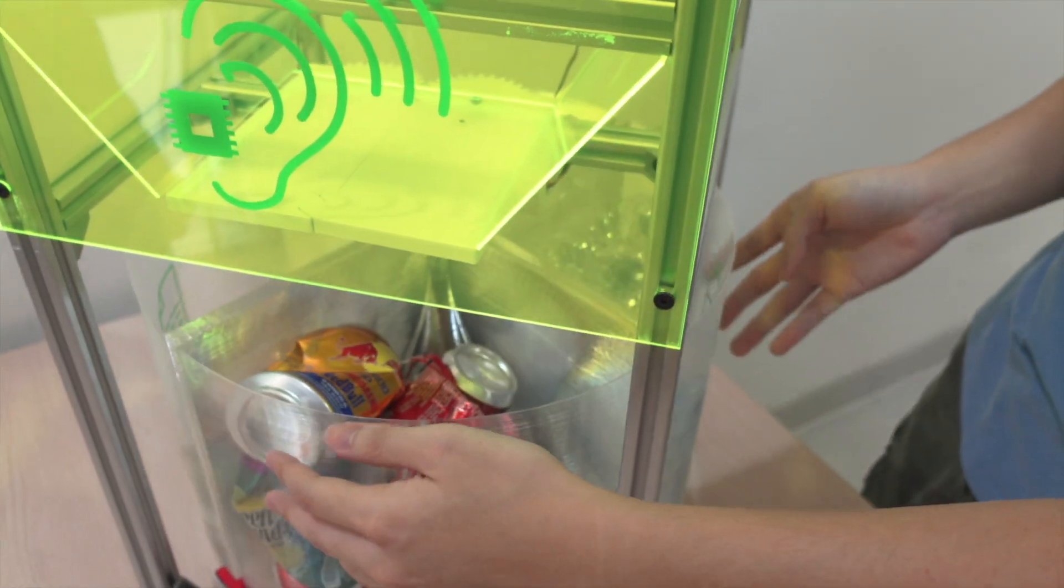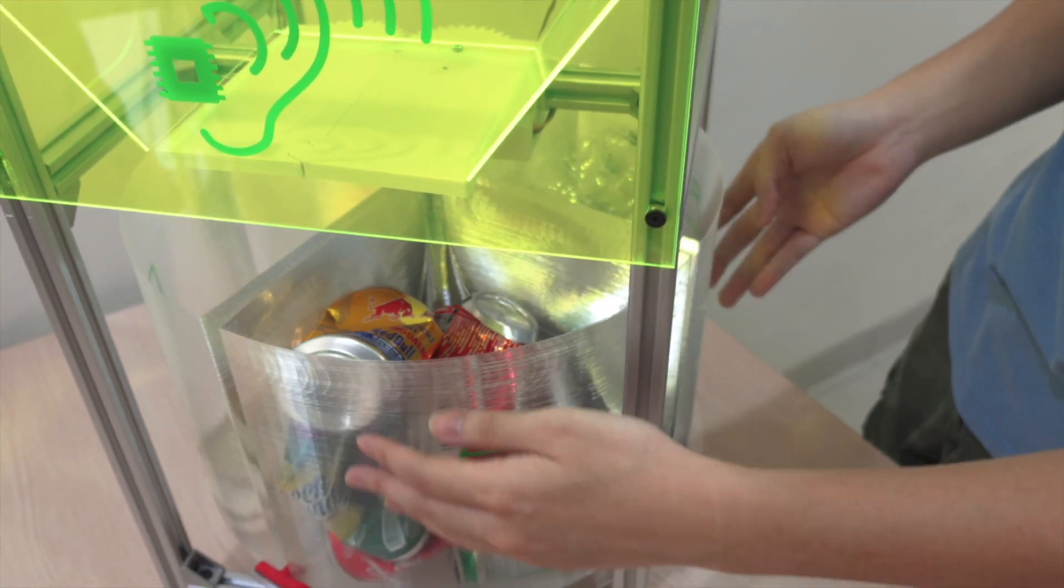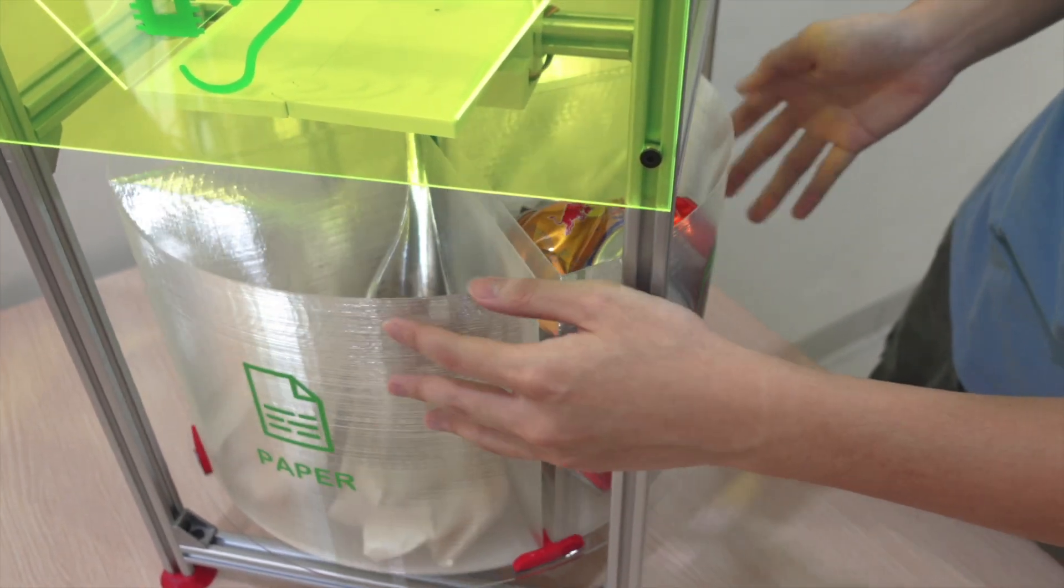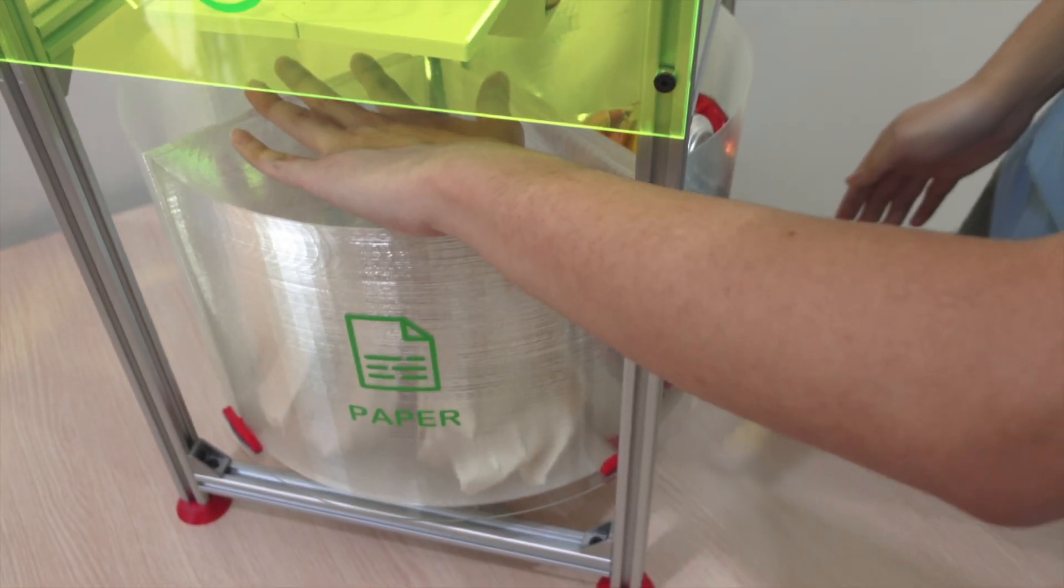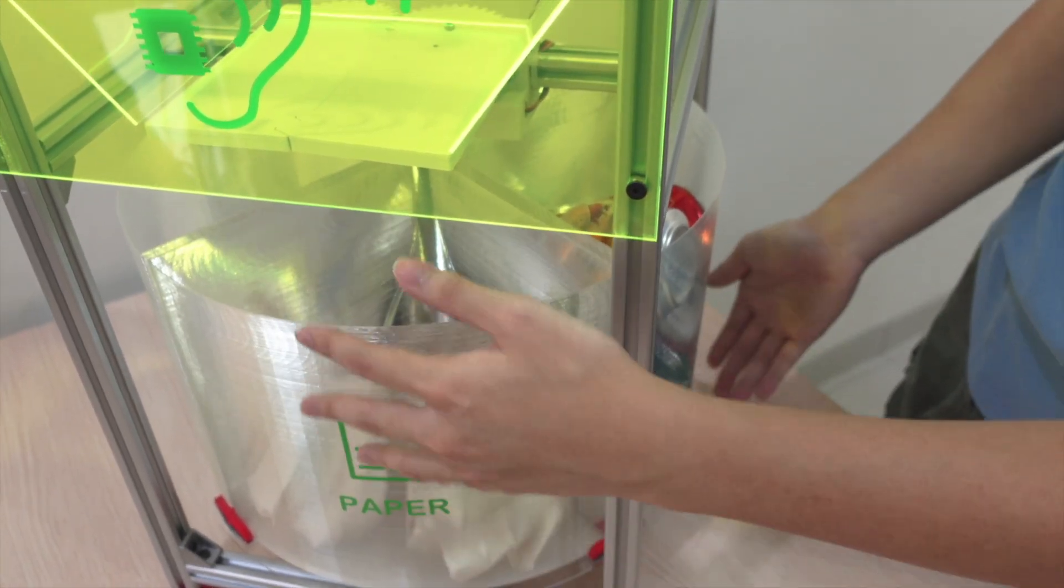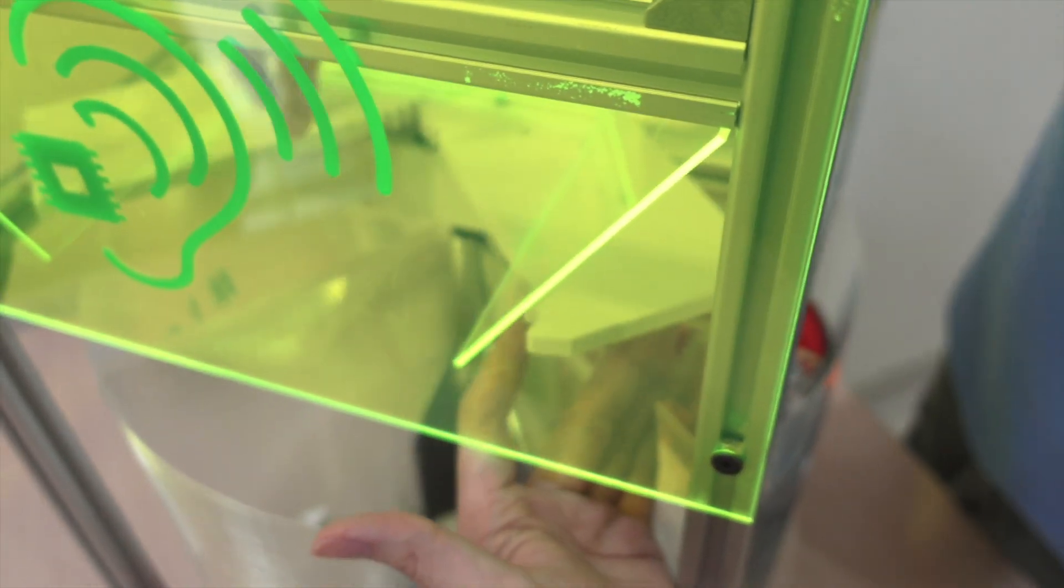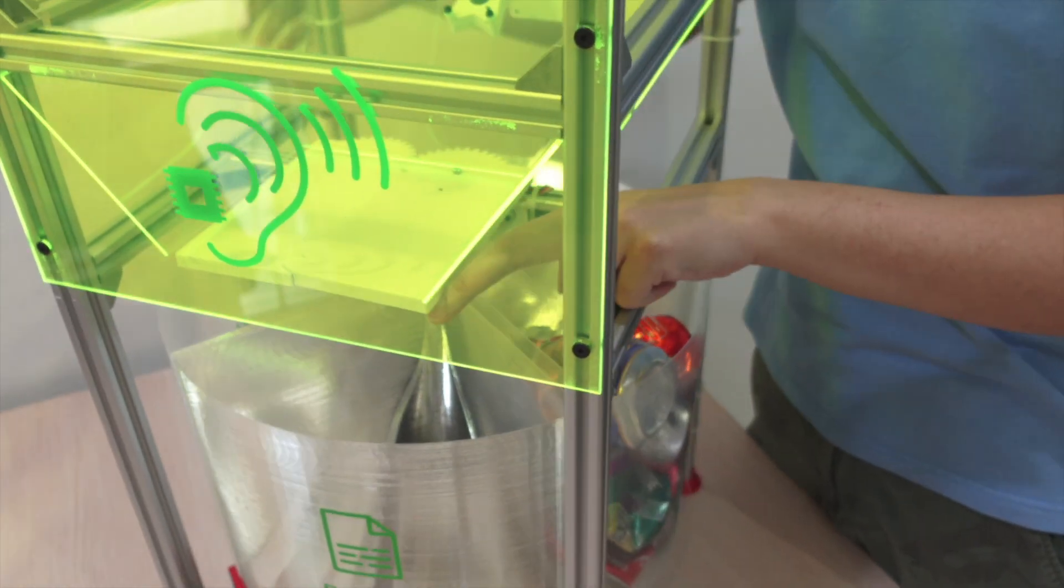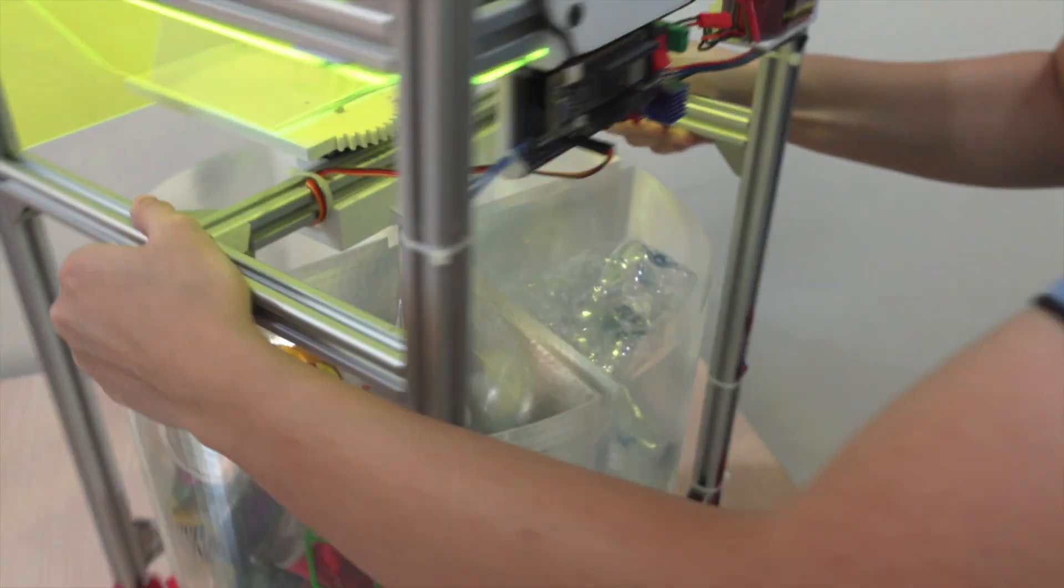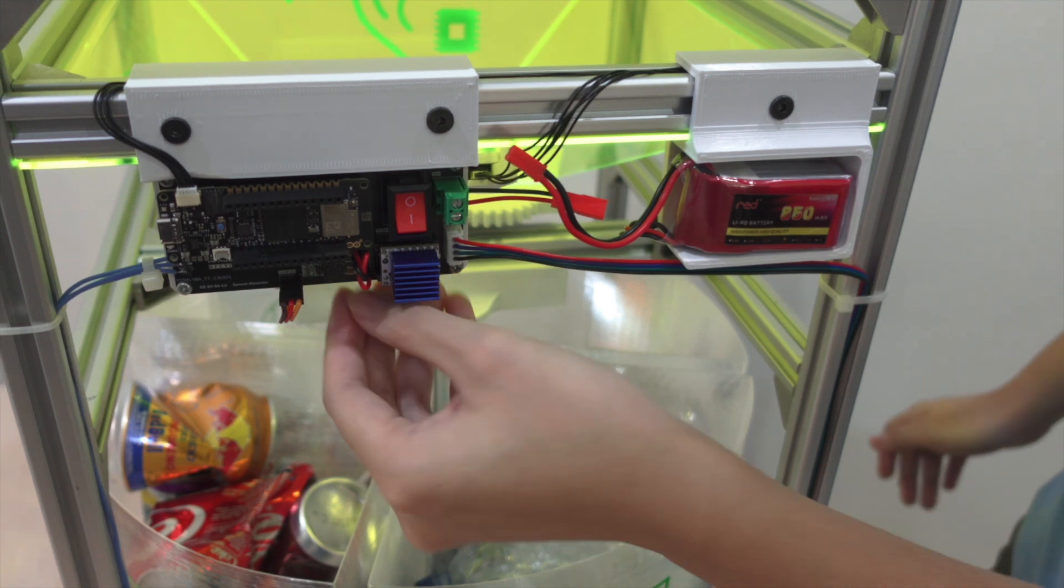Once classified, the inference will output which object that is, and then the stepper motor will place the compartment of the right label in front. Then the servo motor will open and the object will fall into the right compartment. To achieve that, this is the electronics, a custom-made PCB.